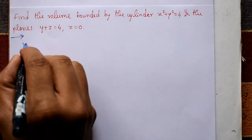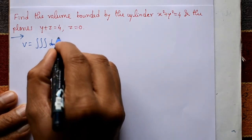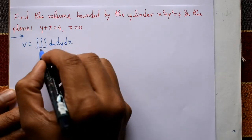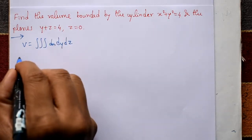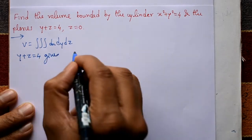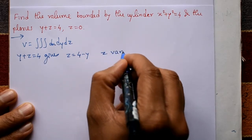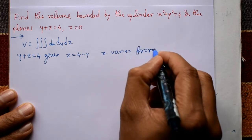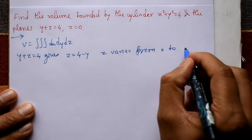Now, solution. Volume V is equal to a triple integration with respect to x, y, and z. The required limit: z varies from 0. Taking the equation y plus z equals 4, this gives z equals 4 minus y. So z varies from 0 to 4 minus y.